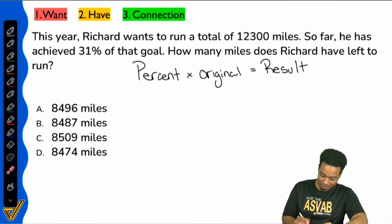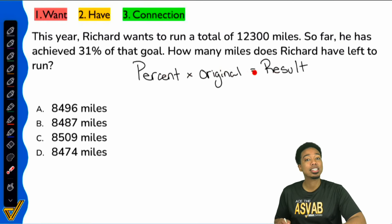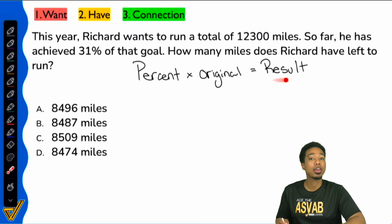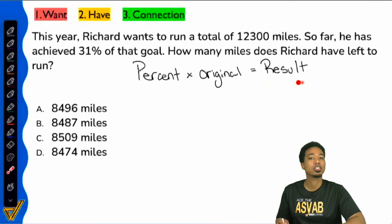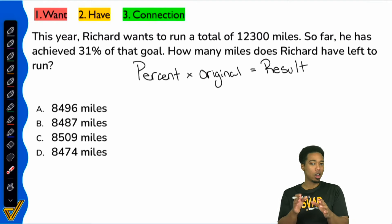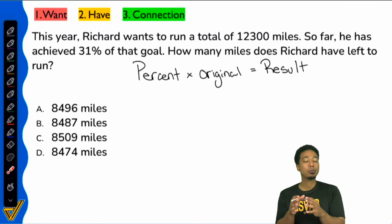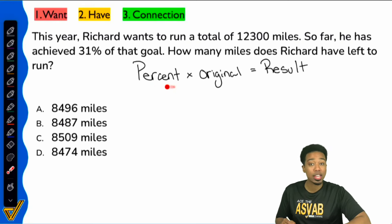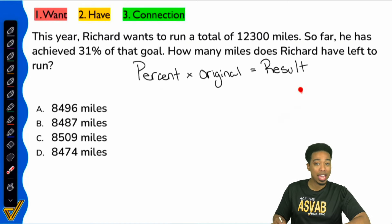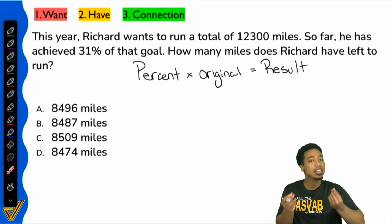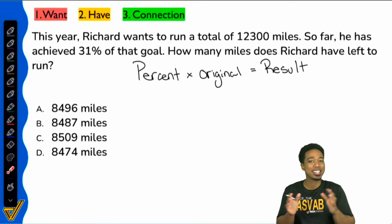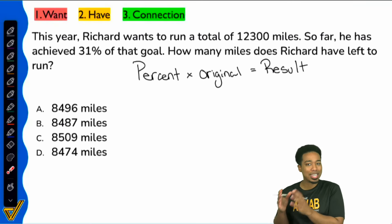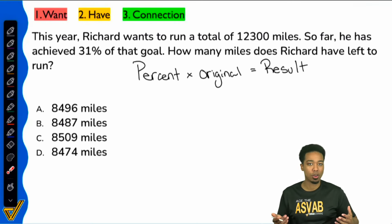The main idea is: the percent that you apply is the result that you get. Again, the percent you apply is the result that you get. We have to acknowledge and understand that main idea, because whatever percent you throw into this formula, the answer that you get represents the same thing. That's really the big key to understanding percentage word problems.